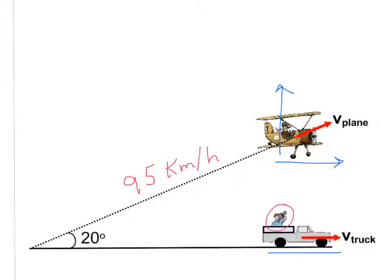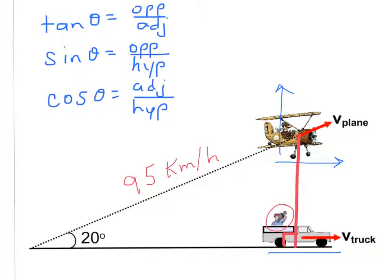The truck needs to travel exactly the horizontal component of the plane's motion. If we draw a line down, it makes a right angle, which is convenient because we can use trigonometric functions to solve this problem. The trig functions are: tangent of theta equals opposite over adjacent, sine of theta is opposite over hypotenuse, and cosine of theta is adjacent over hypotenuse.